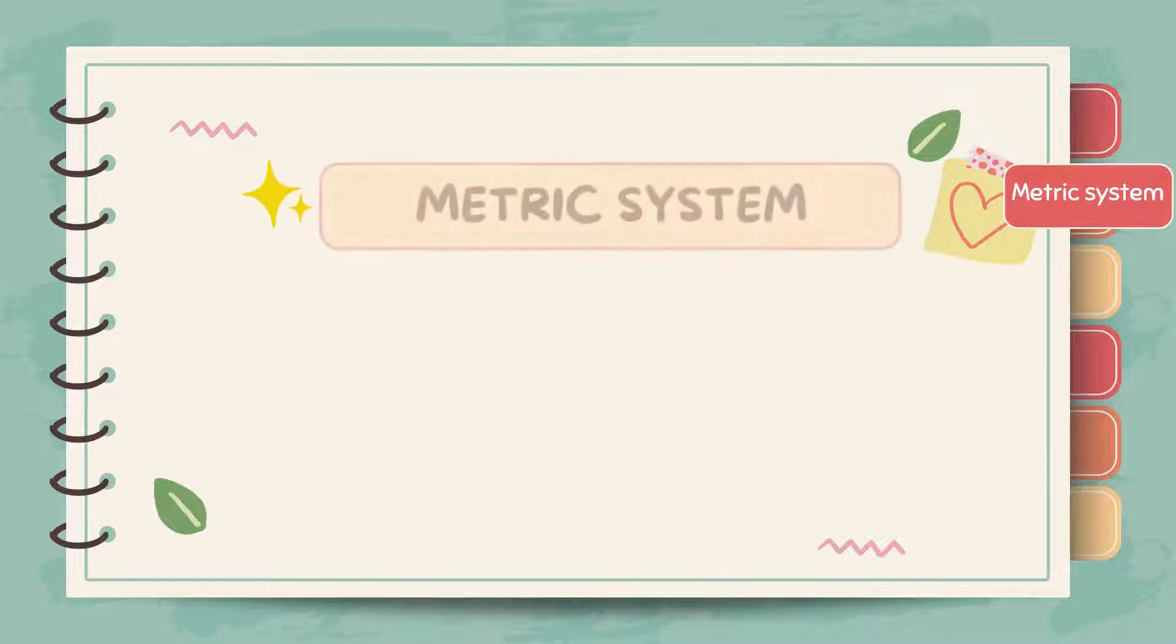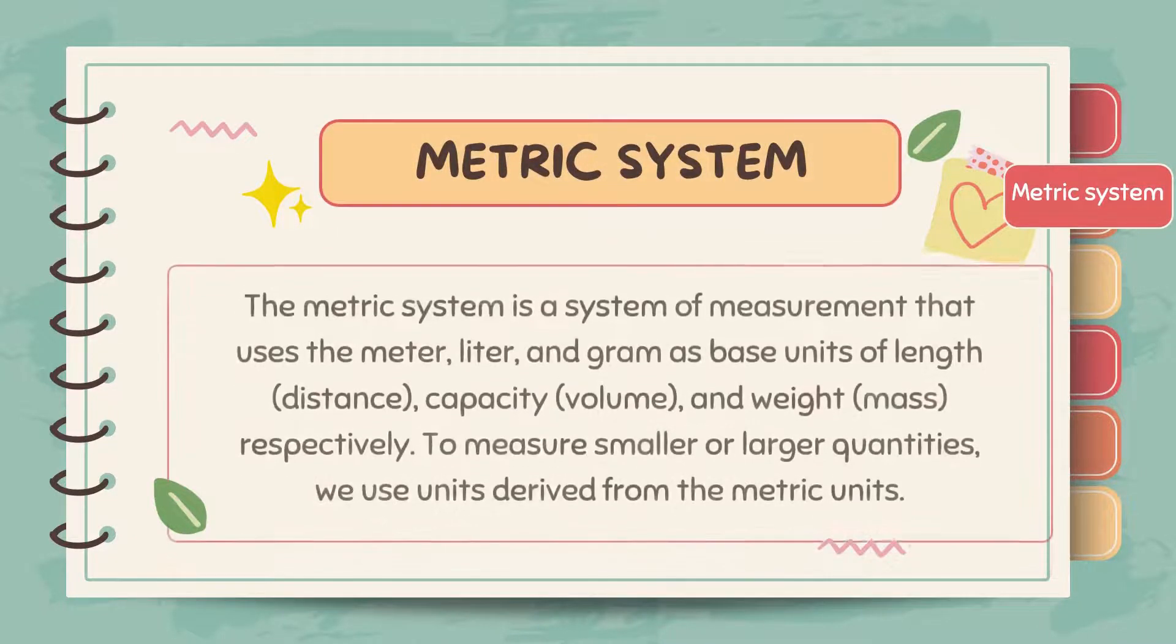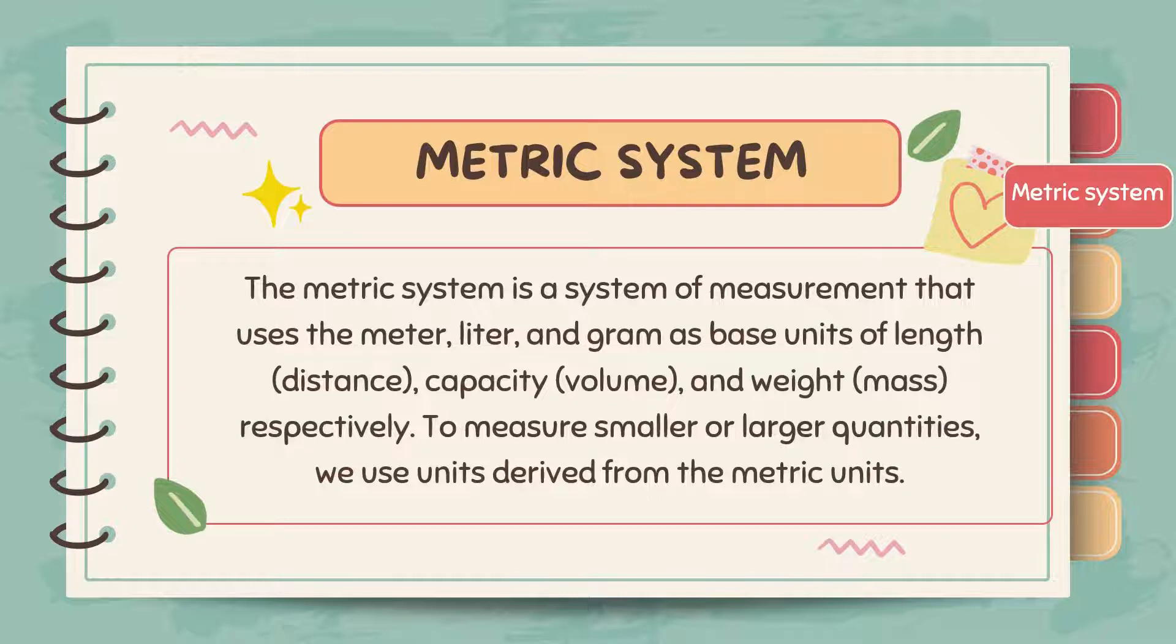Now, what is the metric system? The metric system is a system of measurement that uses the meter, liter, and gram as base units of length, capacity, and weight. To measure smaller or larger quantities, we use units derived from the metric units.